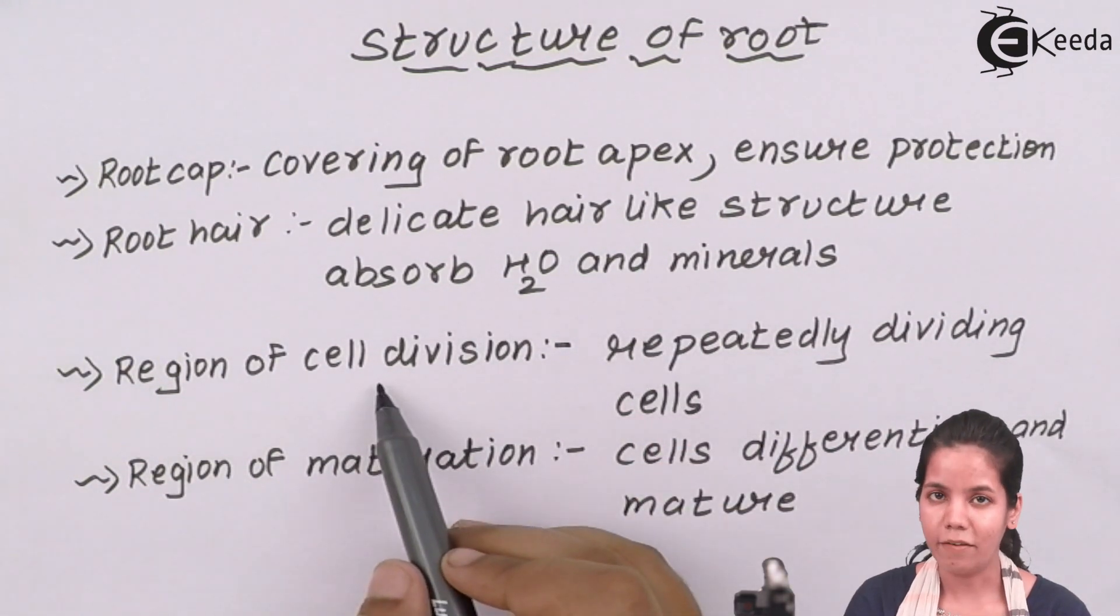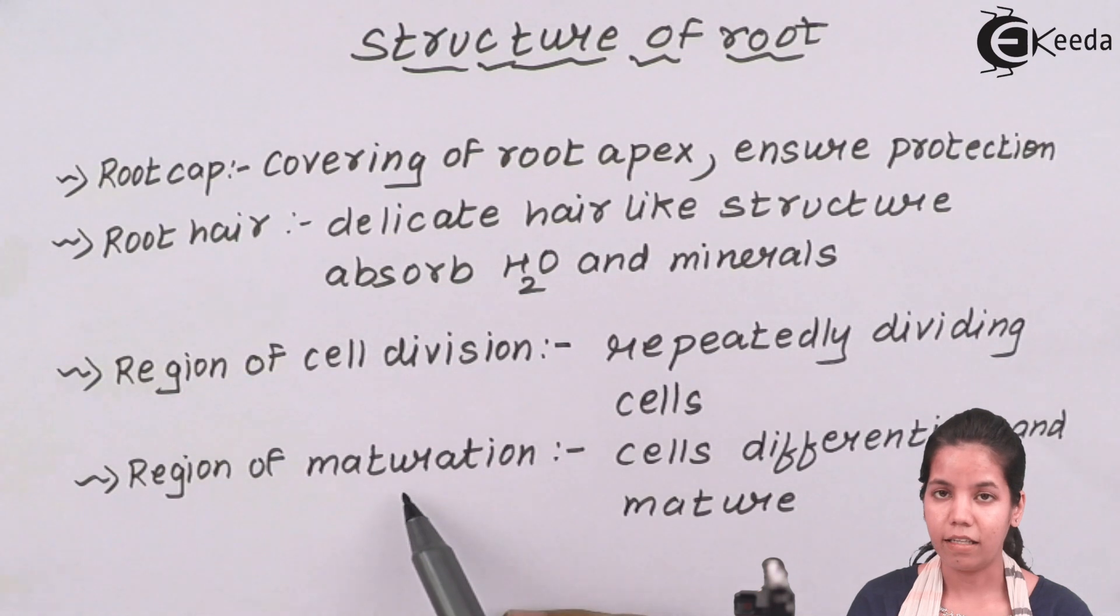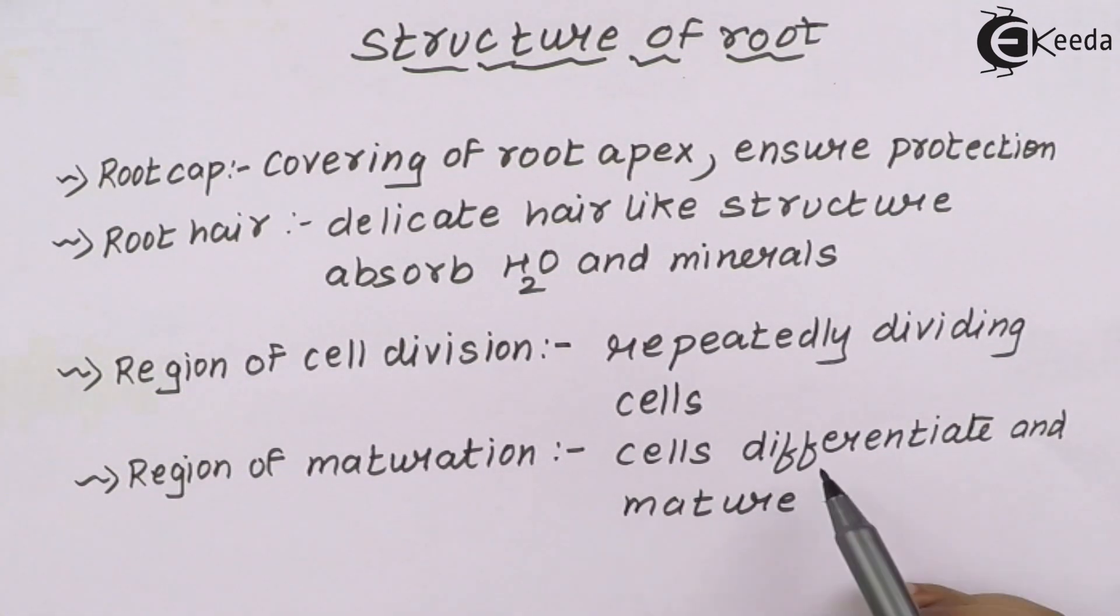Region of cell division or you can say meristematic activity. In this region cells are repeatedly dividing. And lastly region of maturation. In this region cells differentiate. Basically lengthwise increase happens.